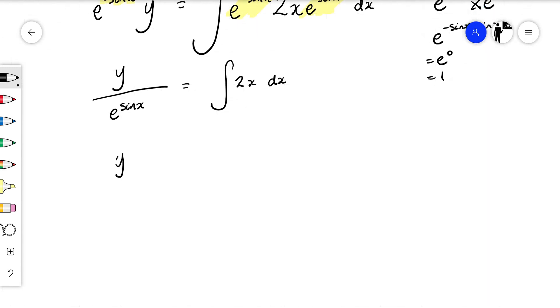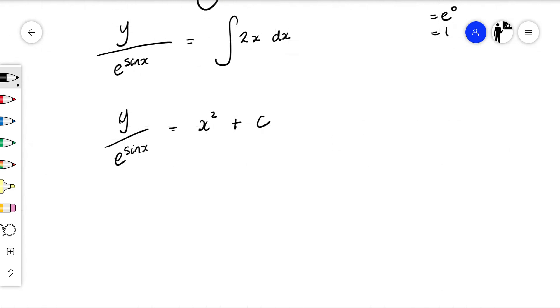We could take that 2 outside of our integral if we wanted to. I'm going to integrate 2x, so that becomes 2x squared over 2, which is just x squared plus c. We want to make y the subject of the formula.